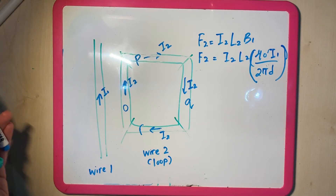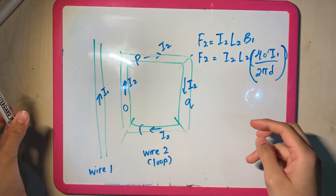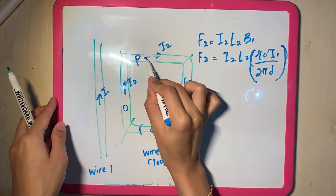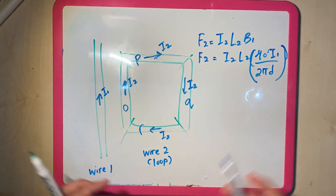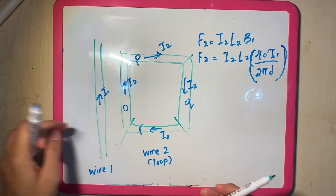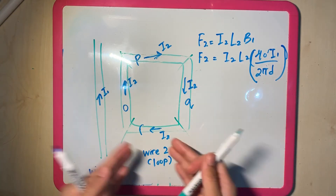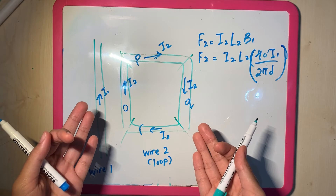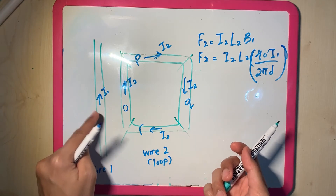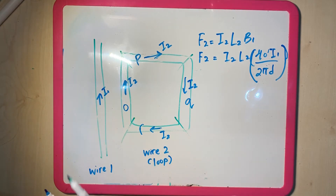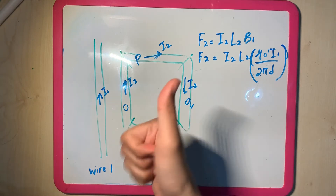I've redrawn the question and rewritten the equation. We know that F2 = I2·L2·B1 by now. We already know that. So let's find out — we have a square loop. What is the F net produced by this magnetic field on this loop?